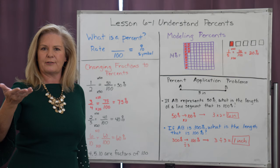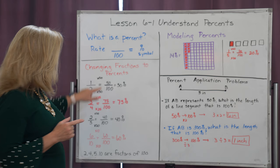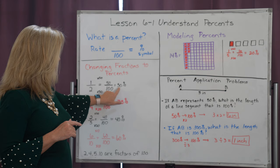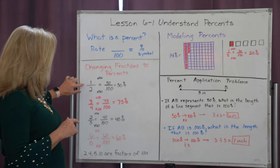Therefore, one times fifty is fifty. The moment we have fifty compared to a hundred, all I need to do is take that numerator, write it as fifty, and put that percent symbol behind it. So one-half is the same as fifty percent.